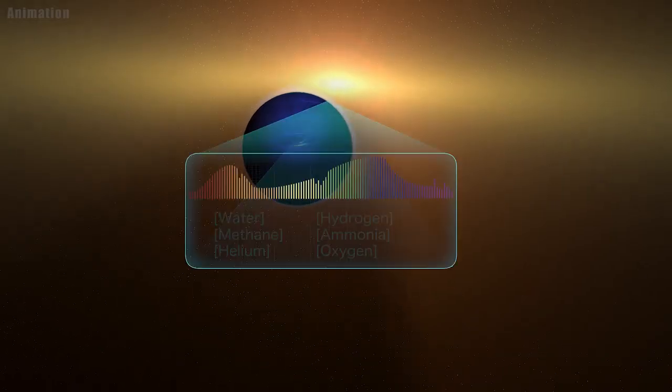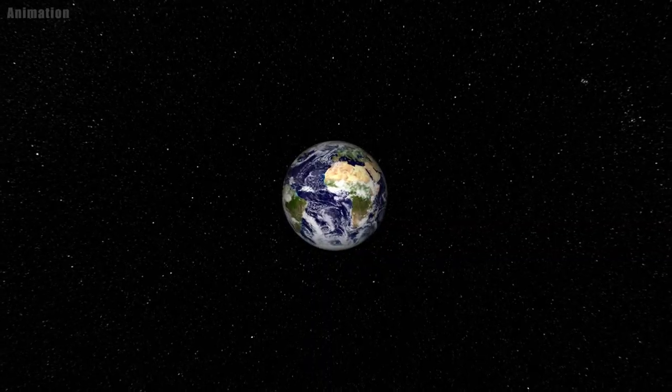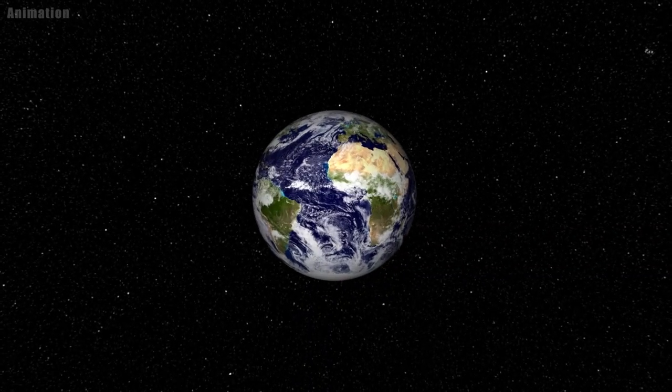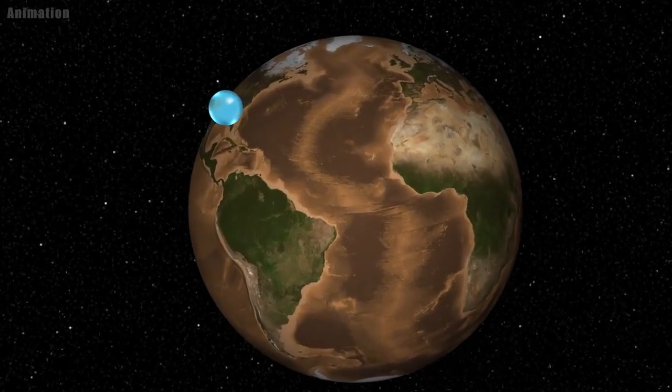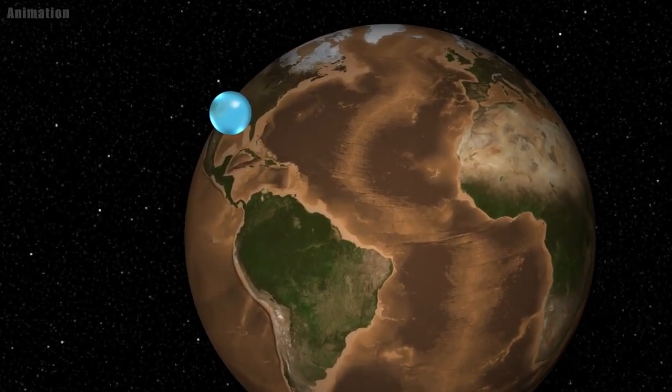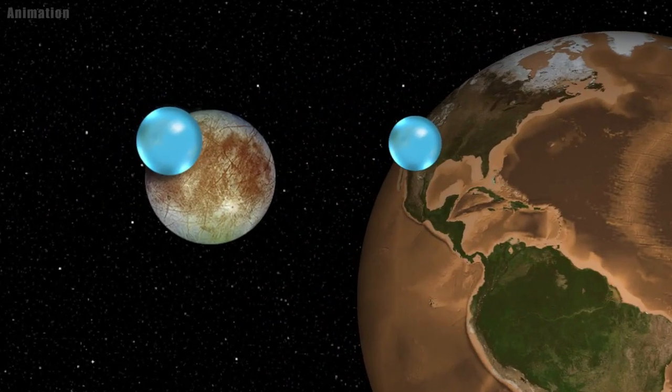Astronomers didn't directly detect water on the Kepler-138 planets. Instead, they compared the planet's sizes and masses to models that concluded up to half of their volume should be made of materials lighter than rock, but heavier than hydrogen or helium. The most common of these materials is water.